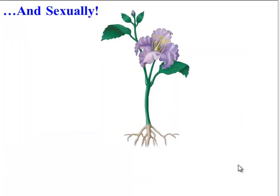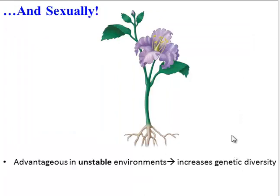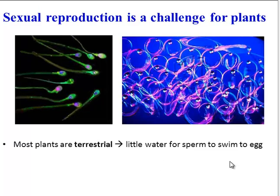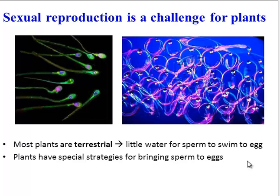Plants can also reproduce sexually. And this is advantageous in unstable environments because, as we know, sex increases genetic diversity. However, sexual reproduction is a challenge for plants because most plants are terrestrial — they live on land, and thus there is little water available for their sperm to swim and fertilize an egg. So they have developed special strategies for bringing sperm to eggs.